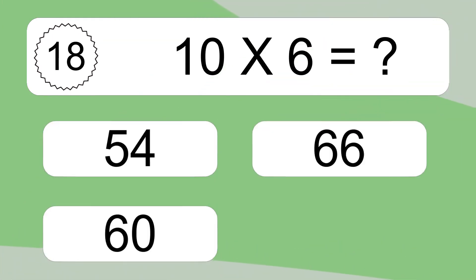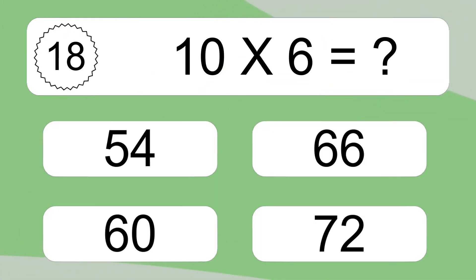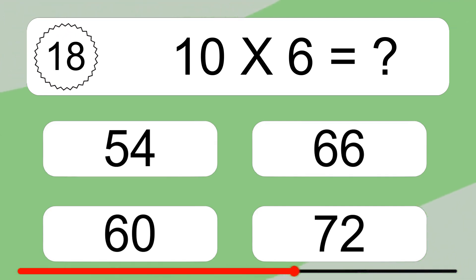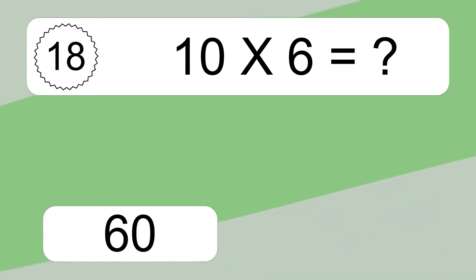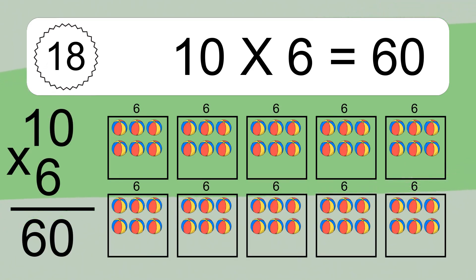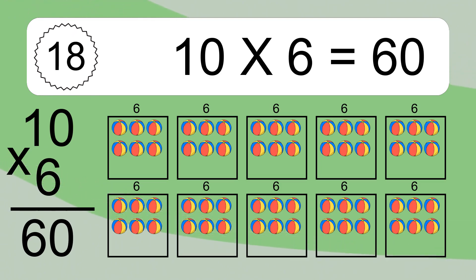10 times 6 equals what? 10 times 6 equals 60. We have 10 boxes, and each box has 6 colorful balls inside. If you count all the balls in all the boxes together, you will have 10 times 6 balls.